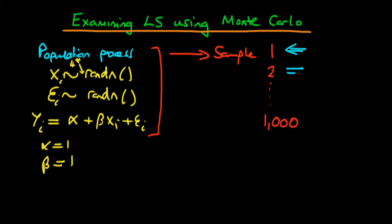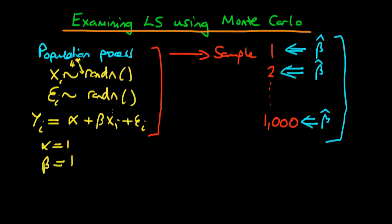We're going to apply least squares estimators to each of these samples, and that's going to give us a particular estimate for the parameter beta. They're going to be slightly different each time because the pseudo-random numbers generated will give us slightly different samples. So from the first sample we get beta hat star 1, from the second we get beta hat star 2, and so on for each of the different samples.